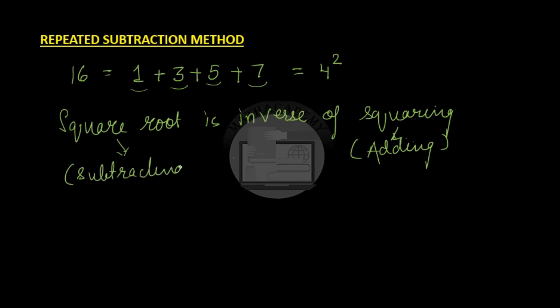We subtract consecutive odd numbers till we get zero. Let us take an example. We have to subtract consecutive odd numbers from 16: 16 - 1 = 15, 15 - 3 = 12, 12 - 5 = 7, and 7 - 7 = 0.